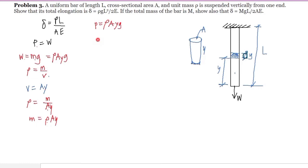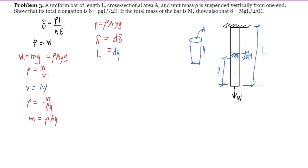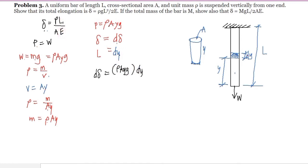If we consider the deformation and take a differential strip, we have the equivalent differential of the deformation. For the length element, that is the differential dy. So the differential deformation would be: P is rho·A·Y·G and L is dy, giving d-delta equals rho·A·Y·G·dy over AE.